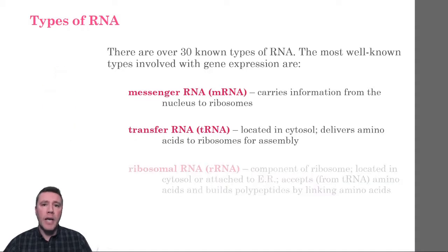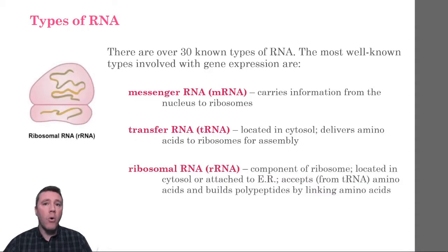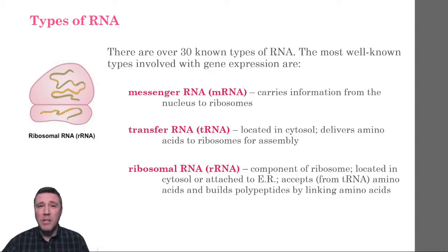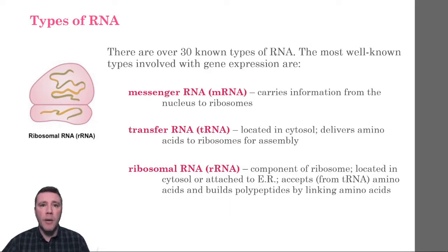The third type of RNA is ribosomal RNA, or rRNA. Ribosomes are complex cellular machines found free-floating in the cytosol or attached to the endoplasmic reticulum, and are comprised of dozens of distinct proteins as well as a specialized form of RNA. Interestingly, about 80% of all of a cell's RNA is, in fact, ribosomal RNA. rRNA plays a critical role in bringing together messenger RNA and transfer RNA, which will be observed in Topic 6.4.